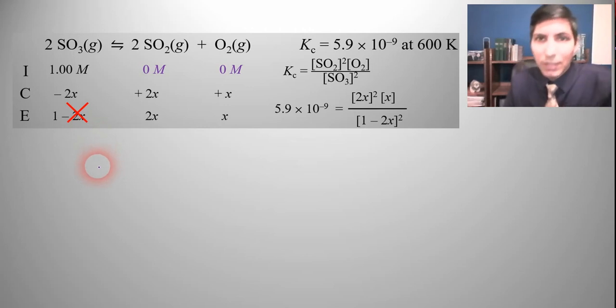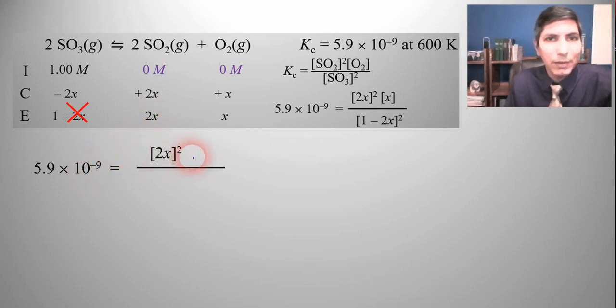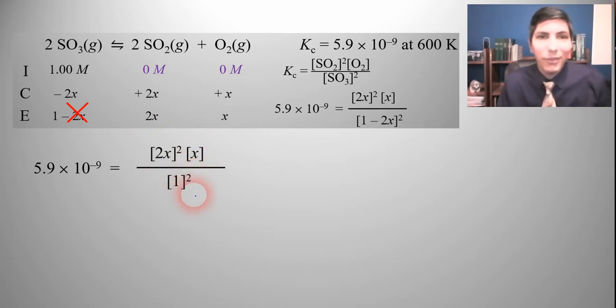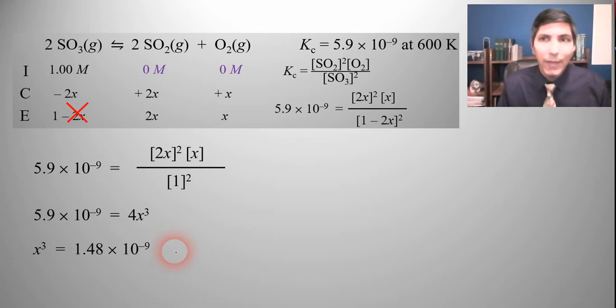Now let's plug in to the equilibrium constant expression. We got Kc equals SO2 squared times O2 over now it's 1 squared and now it makes our math a whole lot easier. We don't have that quadratic and all the foiling to deal with. When I cross multiply I get 4x cubed equals 5.9 times 10 to the minus 9. Divide both sides by 4 and then just take the cube root on my calculator and I get that x equals 1.1 times 10 to the negative third.